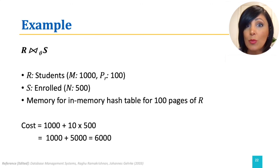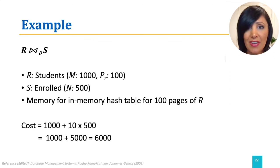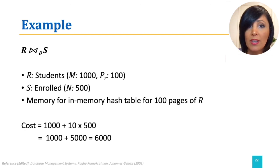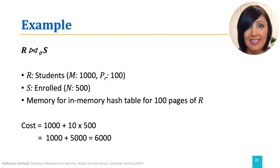This is a considerable reduction compared to nested loop join, which was 1000 plus 5 times 10 to the power of 7, or even compared to retrieving relations one page at a time, which yielded a cost of 501,000 IO operations. This is a considerable gain.